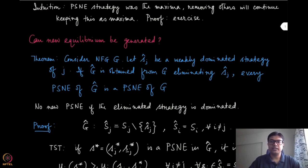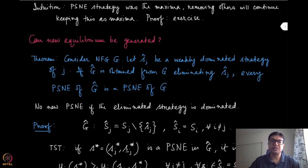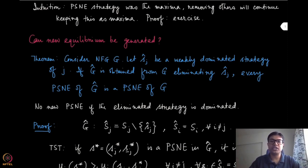What can happen when you remove weakly dominated strategies is that you may have removed some PSNEs — we have seen one example before where eliminating in a specific order ended up in a specific pure strategy Nash equilibrium, but eliminating in a different order ended up in a different one. In one of those eliminations you removed some of the pure strategy Nash equilibria of the original game, but you cannot introduce new pure strategy Nash equilibria. That is exactly what this theorem is saying.